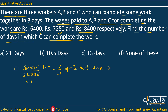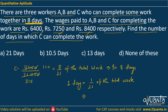This 8/21 of the work has been done by C in 8 days. So in 8 days C completes 8/21 of the work, which means in 1 day C completes 1/21 of the total work. This again means that C will take 21 days in total to finish the whole work.